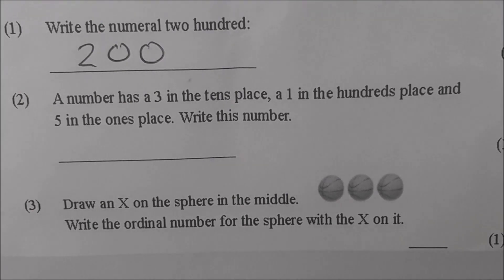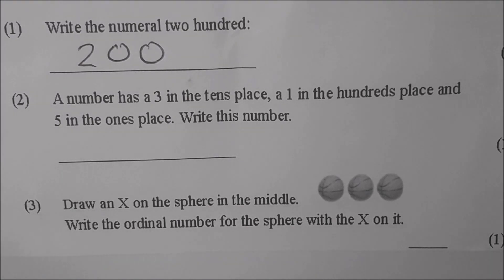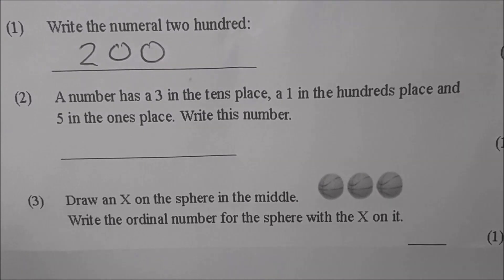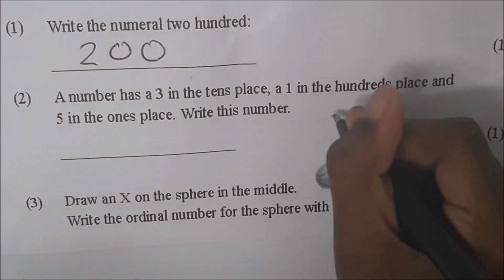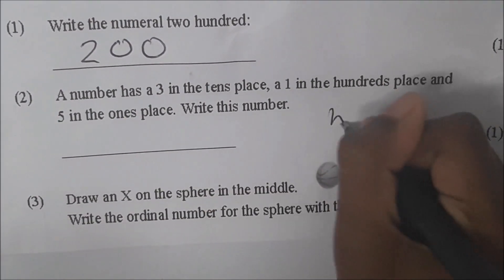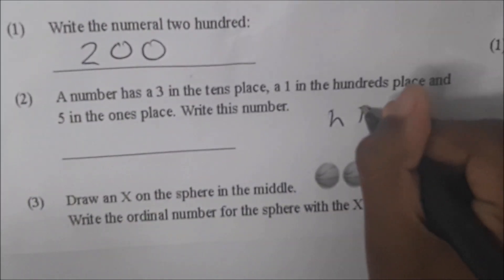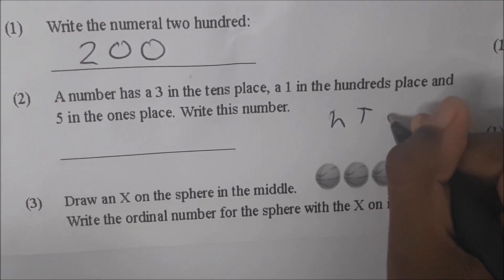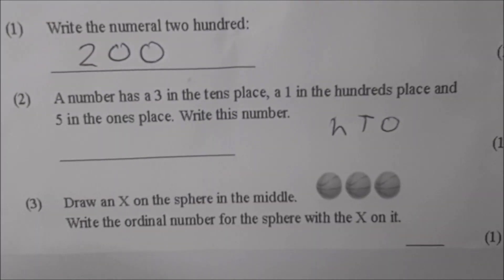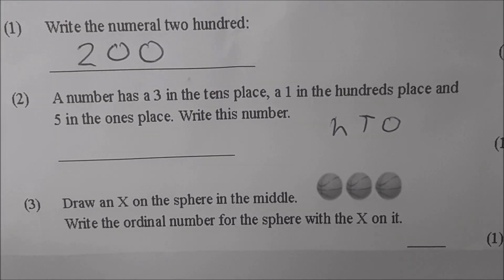Read number 2. A number has a 3 in the tens place, a 1 in the hundreds place, and a 5 in the ones place. Write the number. How would you work that, Sky? Put a capital H for hundreds, T for tens, and O for ones. She has placed the letters to represent hundreds, tens and ones. A number has a three in the tens place — where will you put the three? A one in the hundreds place — where will you put the one? And five in the ones place — where will you put the five?